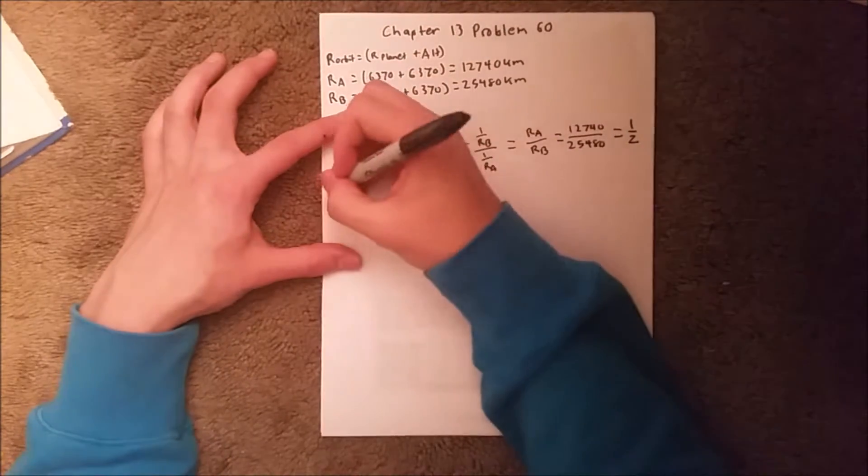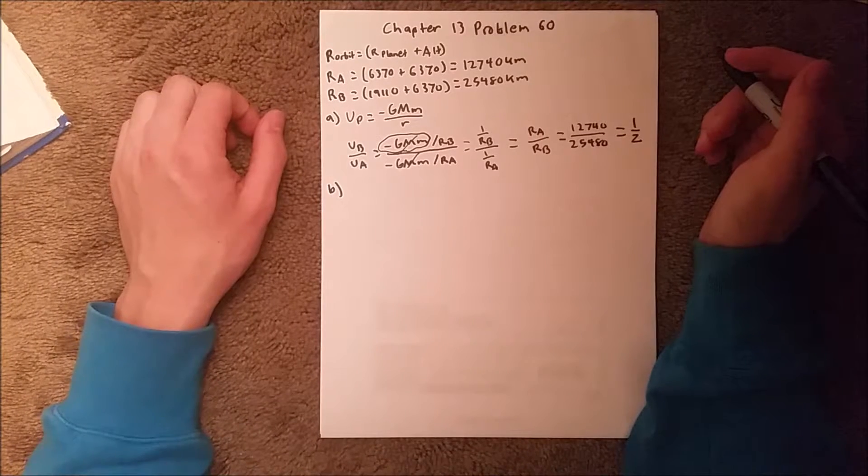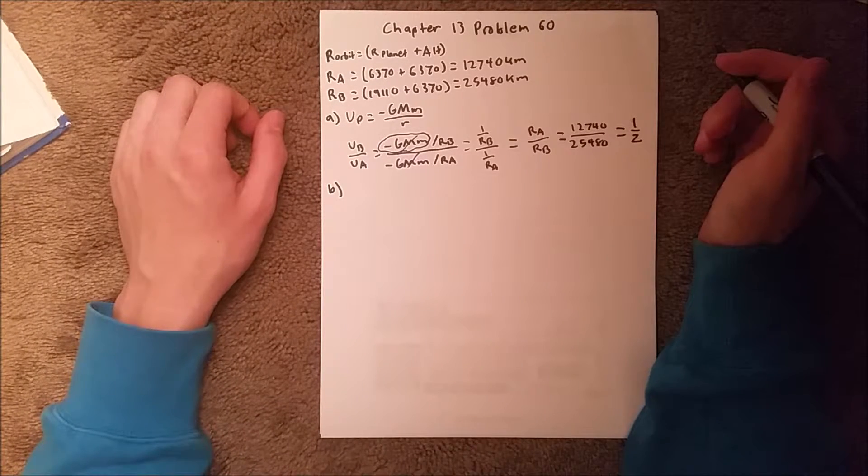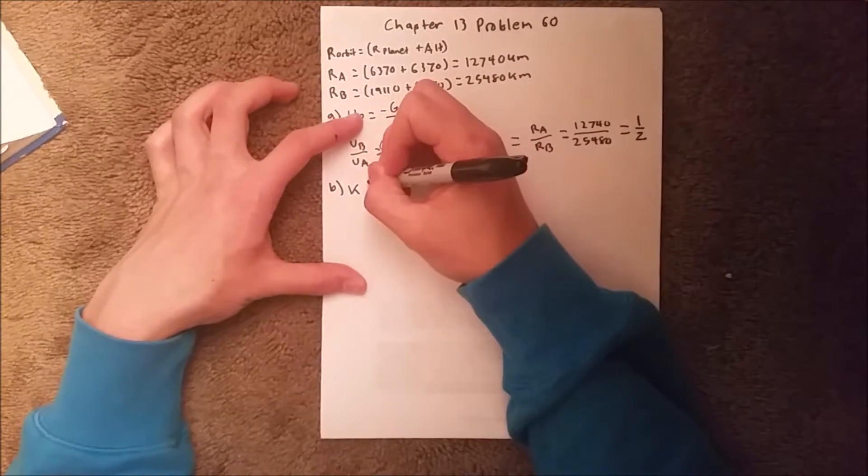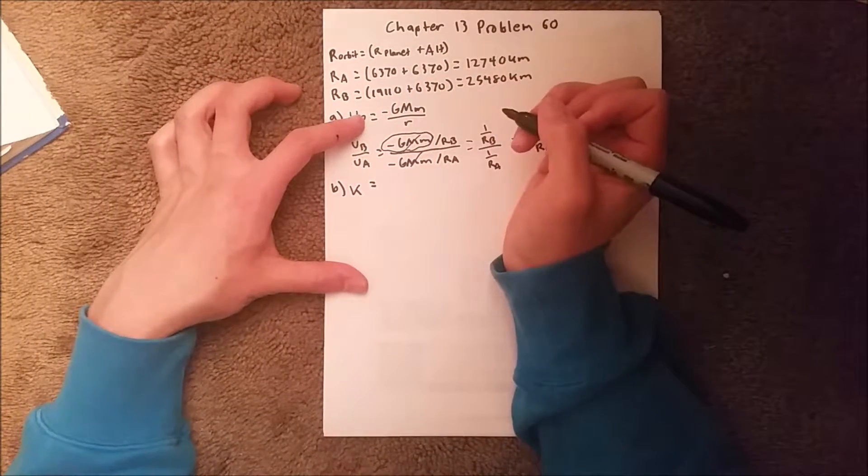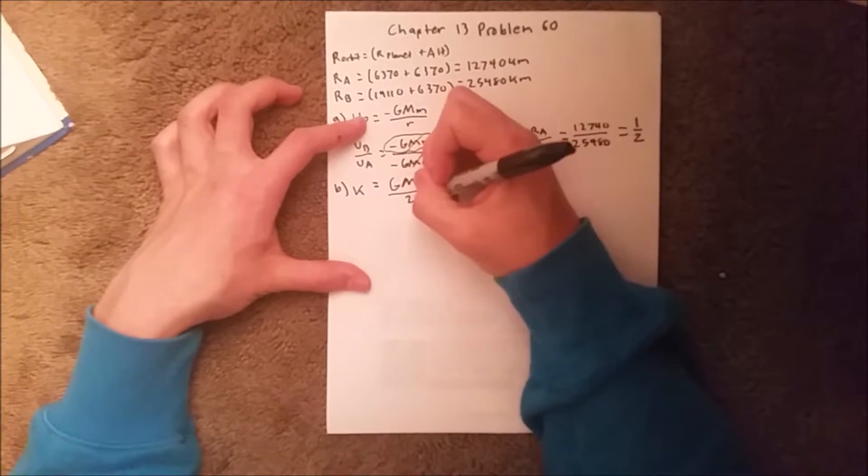And then for part B, we are asked to find another ratio, but this time we are doing the kinetic energy. So we know that the kinetic energy equation is equal to G, big M, little M, over 2R this time.